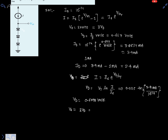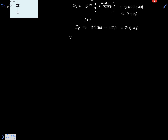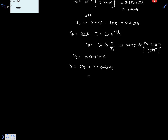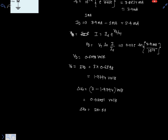Since three diodes are connected in series, the new output voltage is 3 times Vd: 3 times 0.6598 equals 1.9794 volts. Therefore, the change in output voltage delta Vout equals 1.9794 minus 2 volts, which gives minus 0.02051 volts, or minus 20.51 millivolts.